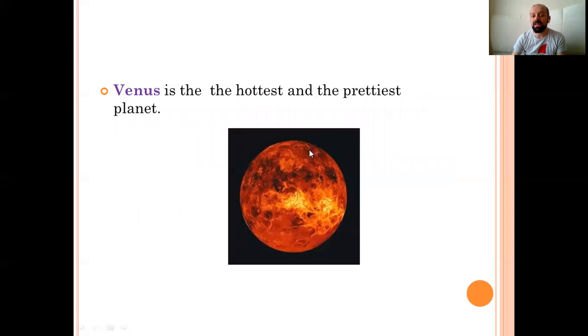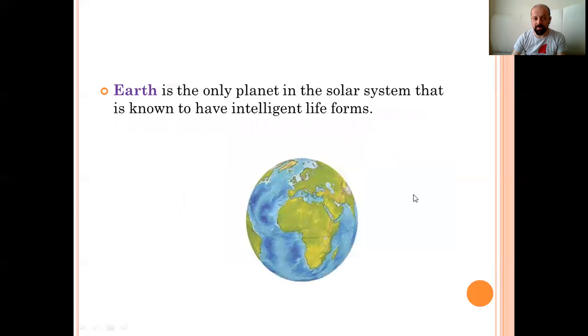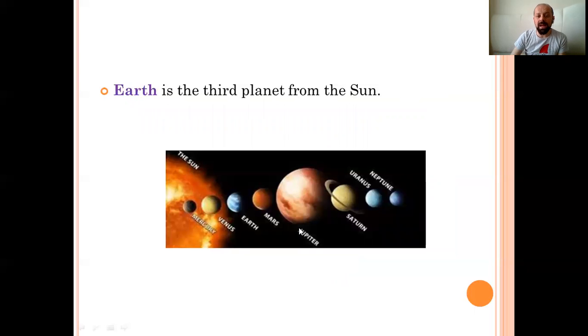Venus is the hottest and the prettiest planet. Evet. Venus en sıcak olan gezegenimiz. Earth is the only planet in the solar system that is known to have intelligent life forms. Dünya, Güneş sistemindeki hayat olan, yani intelligent life forms, zeki hayat formuna sahip olan bilinen tek gezegendir diyoruz. Earth is the third planet from the sun. Yes. Dünya, Güneş gezegenindeki üçüncü gezegen. Güneş'e göre görüyorsun burada. Bir, iki, üçüncü gezegen.